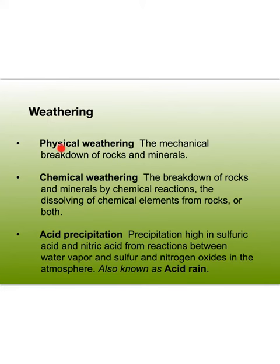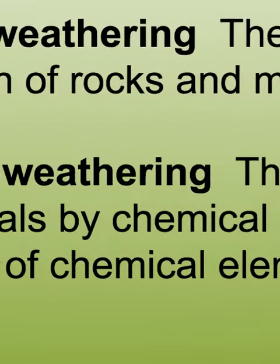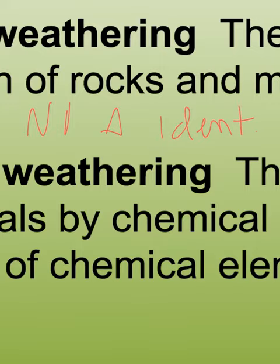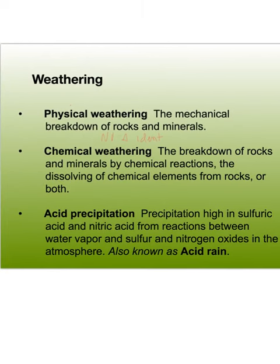Physical weathering is the mechanical breakdown of rocks and minerals. What you need to remember about physical weathering is that there is no change in the identity of the elements — that's a hallmark of physical changes. Examples include water breaking things down, wind sweeping things away, tree branches breaking through, and ice freezing and expanding then melting and condensing, which is a very special property of water.